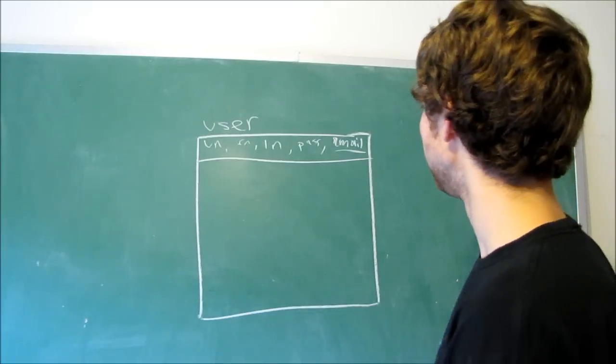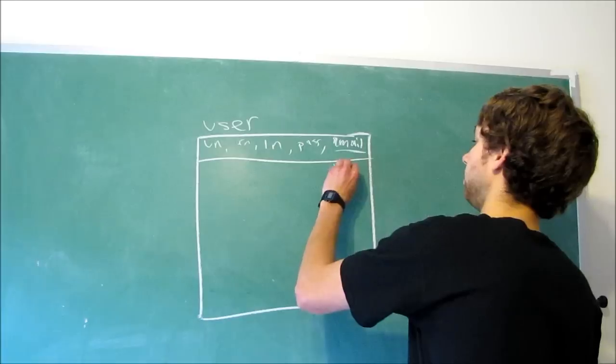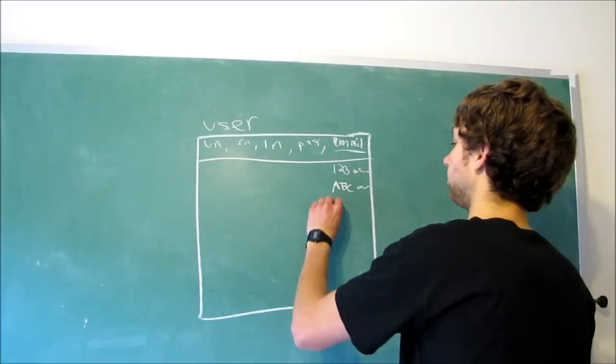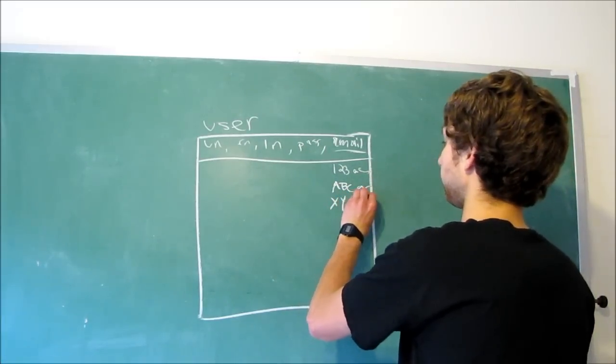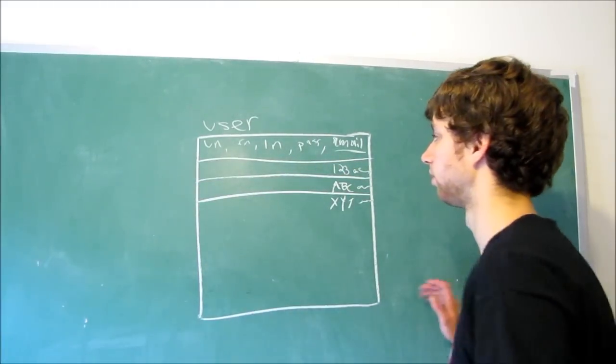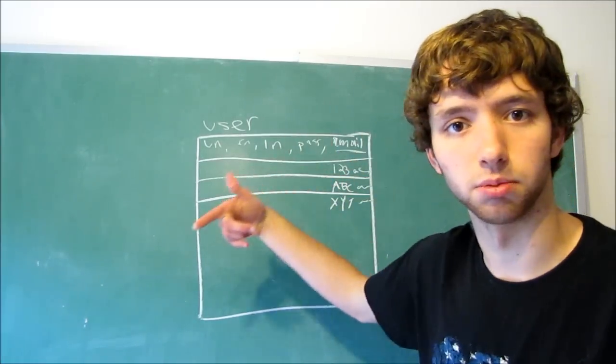The way that works is, basically, let's say we have the emails 123 at blah blah blah, ABC blah blah blah, XYZ blah blah blah. And these are three separate rows. Well, this is going to let us know which person we're talking about.